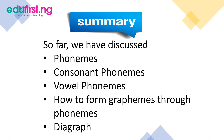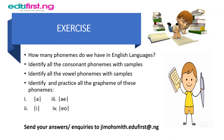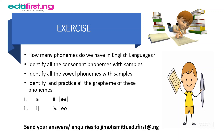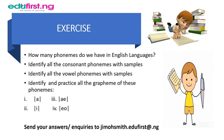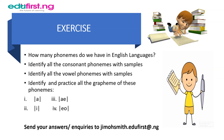This brings us to the end of this class with an exercise. Number one: how many phonemes do we have in the English language? Number two: identify all the consonant phonemes with their samples. Number three: identify all the vowel phonemes with their samples. Number four: identify and practice all the graphemes of these phonemes — the /r/ sound, the /a/ sound, the /e/ sound, and the /o/ sound.